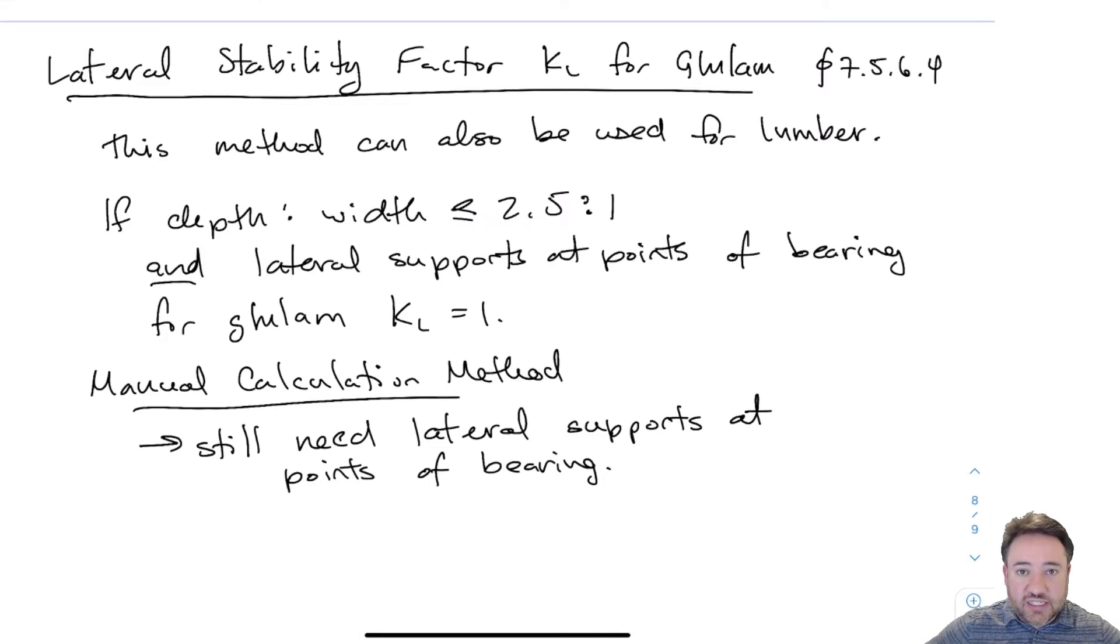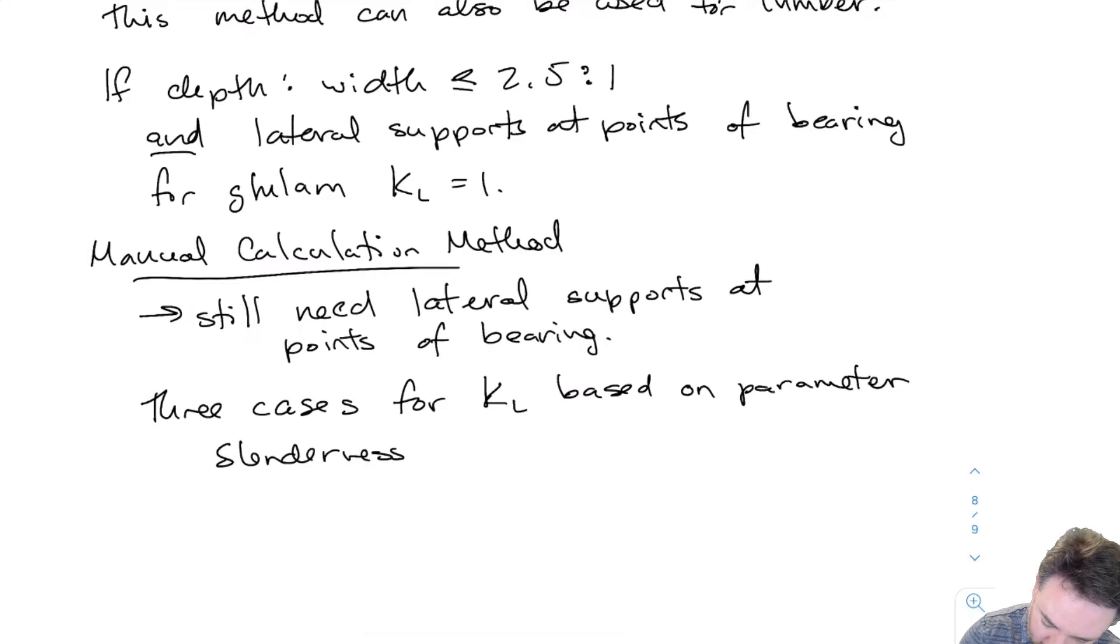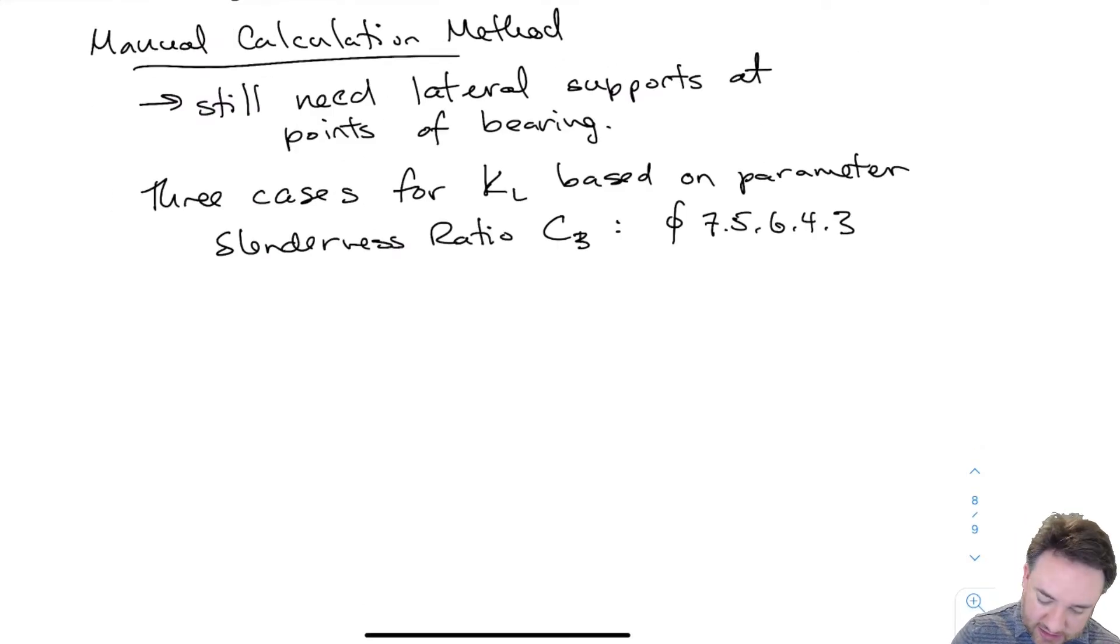We're going to have three different cases for KL depending on a parameter called the slenderness ratio CB. This is analogous to the slenderness ratio CC that we had for compression buckling of columns. CB is the slenderness ratio for lateral torsional buckling of beams. First, we calculate CB using the formula: CB equals the square root of LE times D divided by B squared.